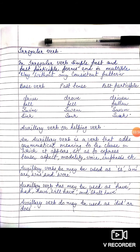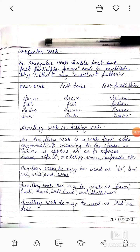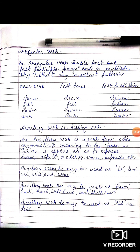Now we will learn irregular verbs. An irregular verb is one whose simple past and past participle forms end in multiple ways without any consistent pattern. They do not follow the same rules as regular verbs. For example: drive — drove — driven; fall — fell — fallen; swim — swam — swum; sink — sank — sunk.